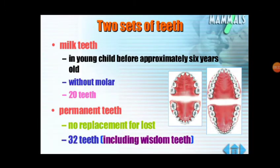We got to know that humans have two sets of teeth. The first one is the milk teeth and the second one is the permanent teeth. At birth, the human infant has no teeth. The first teeth appear after 6 months and fall off between the age of 6 to 8 years. These are called the milk teeth and they are temporary, and they are 20 in number.